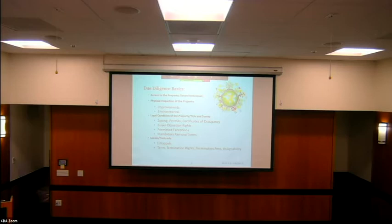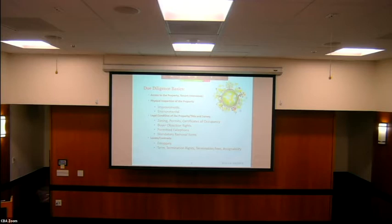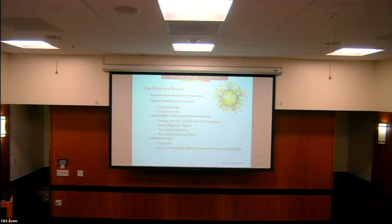Leases and contracts — you want to talk to all your tenants, and you also want to get what's called an estoppel, which is basically an agreement with your tenants saying there are no defaults under this lease, rent has been paid on time, and there are no issues. You want to make sure the lease term is what you expect, there are no early termination rights, and the lease is assignable. If tenants have a termination right, they can get out and you lose that cash flow. Due diligence is essentially making sure you're getting what you think you're getting.